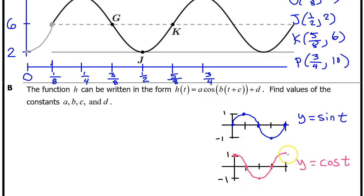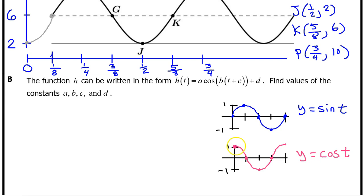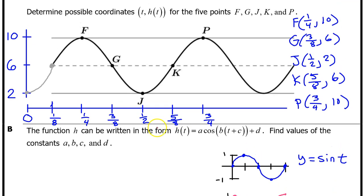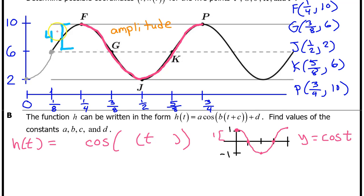Let's trace one period of the cosine function on the graph of h(t), starting at its highest value, falling, and returning to its highest value again. The A value represents a vertical dilation. In the parent function, the distance between the midline and the highest value is 1. On the graph of h(t), that same distance is 4. This distance of 4 is called the amplitude, and it is the value of A.